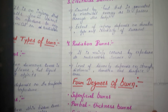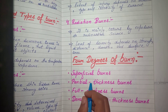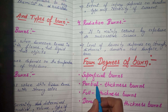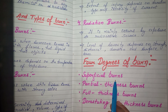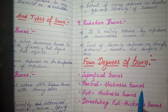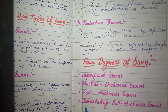Now let's move to the degrees of burn. There are four degrees of burn: first is superficial burn, second is partial thickness burn, third is full thickness burn, and fourth is devastating full thickness burn. We will discuss all four degrees in detail.